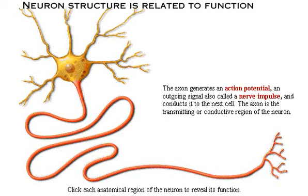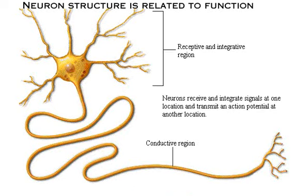The axon generates an action potential — an outgoing signal also called a nerve impulse — and conducts it to the next cell. The axon is the transmitting, or conductive, region of the neuron. Neurons receive and integrate signals at one location and transmit an action potential at another location.